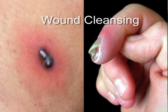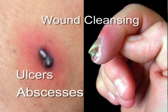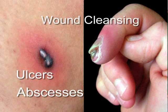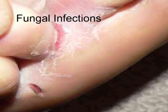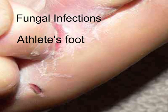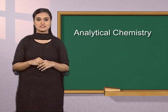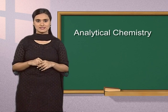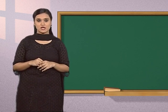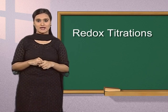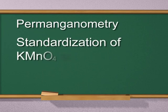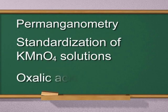Wound cleansing: potassium permanganate is used in the treatment of wounds, ulcers and abscesses. It has broad antimicrobial properties and can kill bacteria, algae and viruses, thereby reducing secondary wound infections. Fungal infections: potassium permanganate is used in the treatment of athlete's foot. In analytical chemistry, a standardized aqueous solution of potassium permanganate is used as an oxidizing titrant for redox titrations, known as permanganometry. For standardization of potassium permanganate solutions, reduction by oxalic acid is often used.